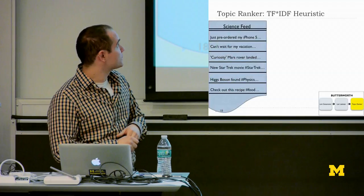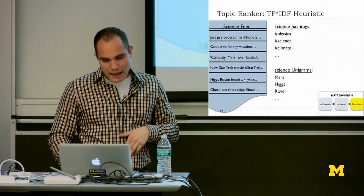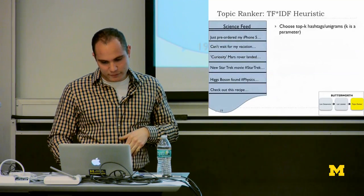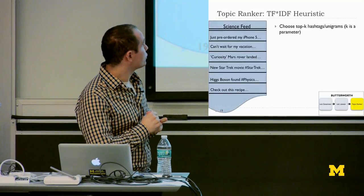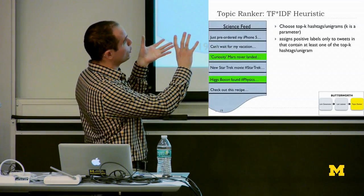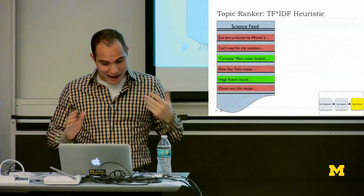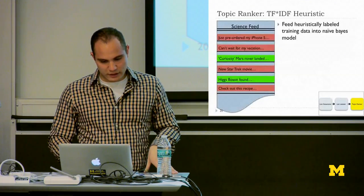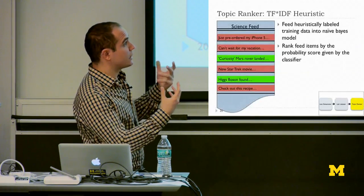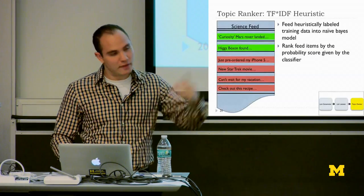The second heuristic is a TF-IDF heuristic: we extract unigrams and hashtags — these are two different methods, one with hashtags and one with unigrams — rank them via TF-IDF, choose the top K hashtags or unigrams, and label only those tweets that contain one of the top K. This ideally picks out only the truly positive examples and leaves out negative ones. We then throw this labeled training data into the naive Bayes model to produce a probability score for each feed item and rank by that score.